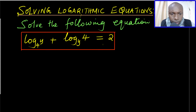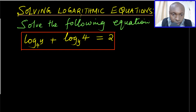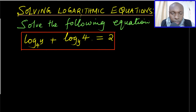So how are we supposed to solve this question? A quick look at this question — you'll notice that we have bases that are different. The first one is log of y to the base of 4, and the next one is to the base of y. You cannot solve this easily unless you change all the bases to be uniform.